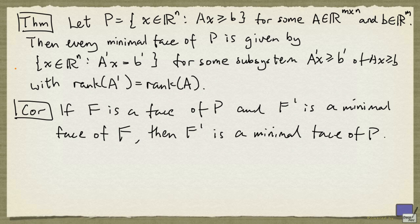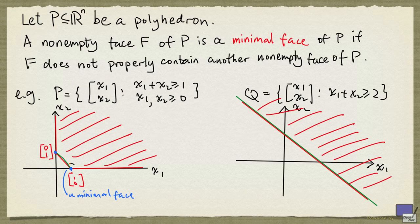Let's go back to the previous examples and see how this theorem applies. For this minimal face here, it's the solution of setting this inequality and this inequality to equalities. And over here, the minimal face is simply obtained by setting this inequality to equality.